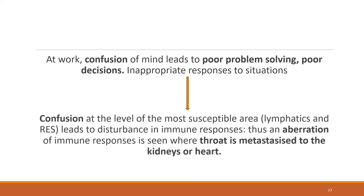He doesn't respond in the proper way — he gives stupid answers. Confusion at the level of the most susceptible area, which is the lymphatics and reticuloendothelial system, leads to disturbance in the immune responses. Thus, an aberration — an alteration of the immune system — is seen.